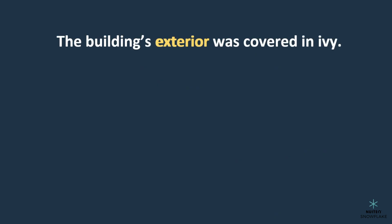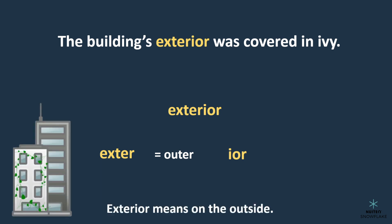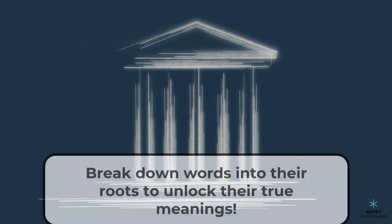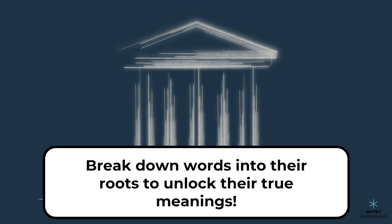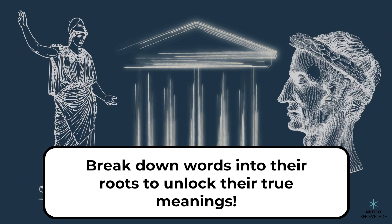The building's exterior was covered in ivy. What does exterior mean? We can see that it has the comparative form of the Latin prefix 'exter,' which means outer. So the word exterior means on the outside. By breaking down words into their roots, we can unlock their true meanings. Keep an eye out for common Greek and Latin roots and you'll be a master at figuring out new words in no time.